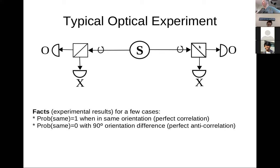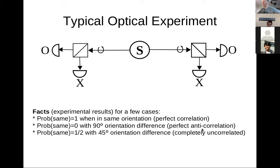When we put the detectors 90 degrees apart, the thing that goes through is now vertically rather than horizontally polarized, so we always get OX or XO — perfect anti-correlation, zero probability of the same result. If we orient them 45 degrees apart, there's just a 50-50 probability of getting the same result on both sides — completely uncorrelated. If you just consider these special cases, it doesn't seem that crazy.